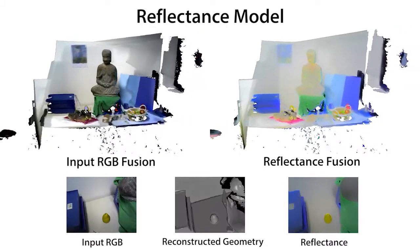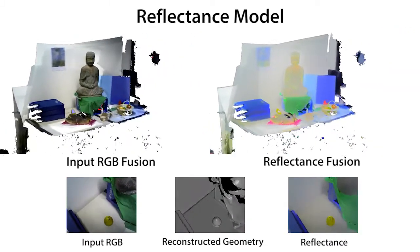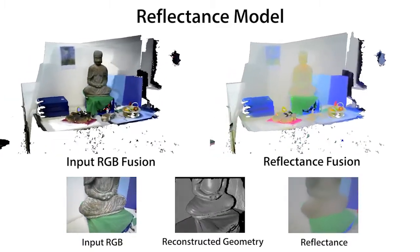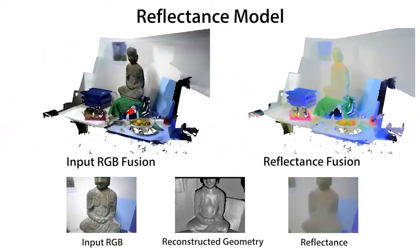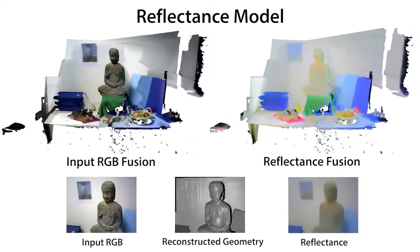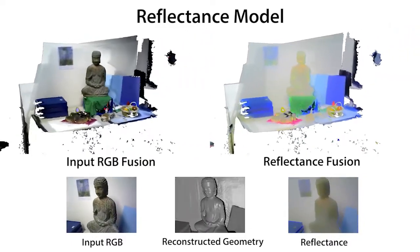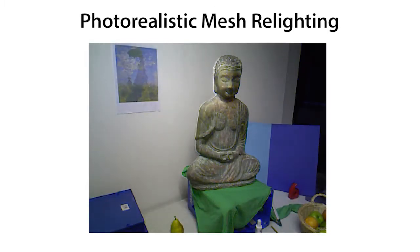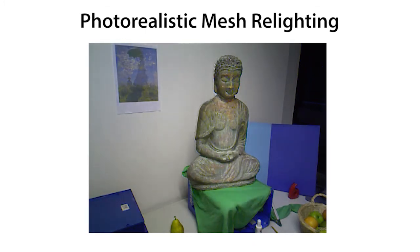Previous fusion methods suffer from shading information in the acquired mesh structure. We store the material reflectance values, making them suitable for use in other applications such as relighting. We demonstrate relighting of the static reflectance fused mesh by combining it with a synthetic shading image based on the geometry. Observe the interaction of the point light source with the geometry as it moves around.